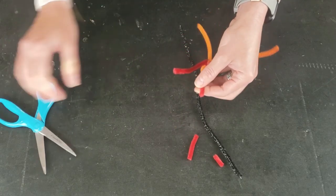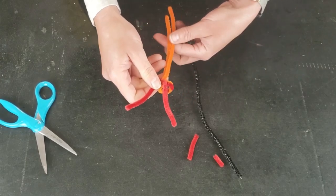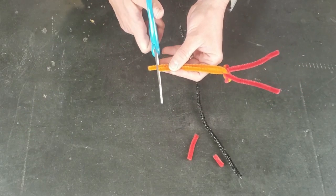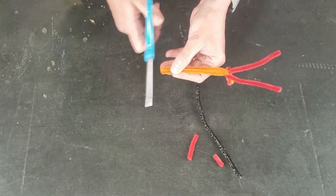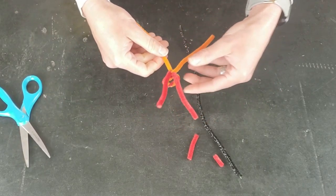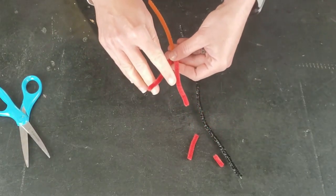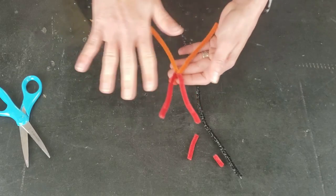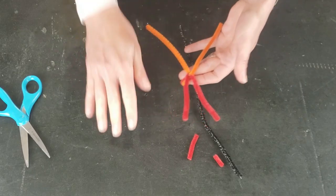And then if this is going to be your bottom piece of pipe cleaner, you want to cut a little bit off of each end. And mine didn't get that even, so at this point I'm just going to go ahead and make them even, so cutting a little bit off of that one and a little bit more off of this one to make them more even.